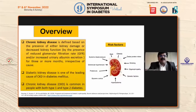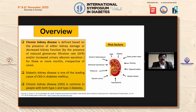CKD is defined by the presence of reduced glomerular filtration rate and/or increased urine albumin excretion for three or more months, irrespective of the cause. Diabetic kidney disease is one of the leading causes of CKD in diabetes mellitus.